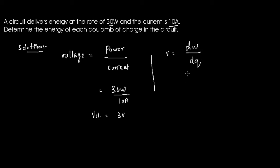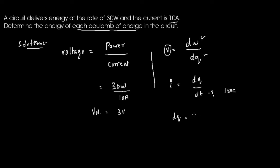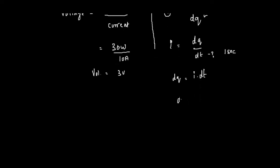We don't know what is dw or dq, but we know the voltage and the formula for current. Current is nothing but dq, the rate of change of charge with respect to time, dq over dt. Time is not given so you can take it as one second. So dq is now I times dt, which is 10 amperes times 1 second, giving us 10 coulombs of charge.